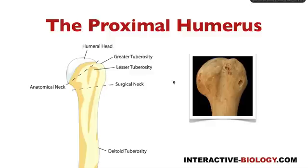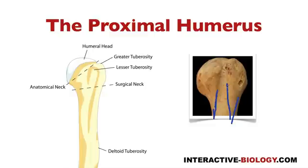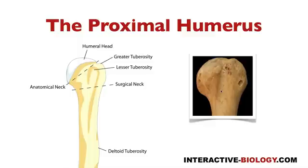Before I move on, I want to point out something else. Here we have the greater tubercle, and it comes down into what we call the crest of the greater tubercle, and the crest of the lesser tubercle. This is the intertubercular groove, and the crest of the greater tubercle would be the lateral lip of that intertubercular groove, while the crest of the lesser tubercle would be the medial lip. When we refer to some of the muscles that insert on that area, we'll refer to the lateral and medial lip of the intertubercular groove.